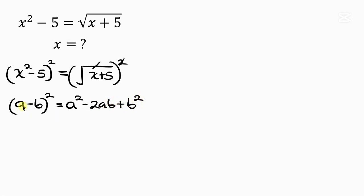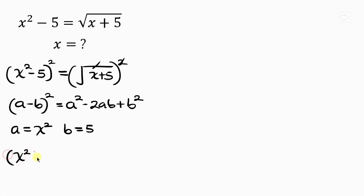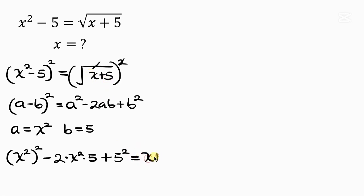Here, a is x squared and b is 5. Expanding: a squared is x squared, squared; minus 2 times a times b is 2 times x squared times 5; plus b squared is 5 squared. This equals x plus 5.